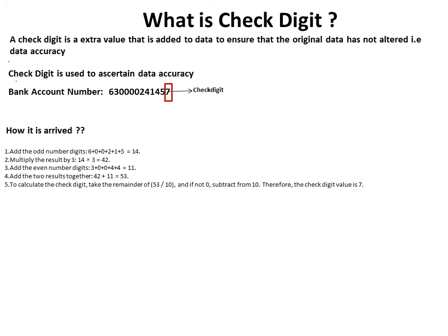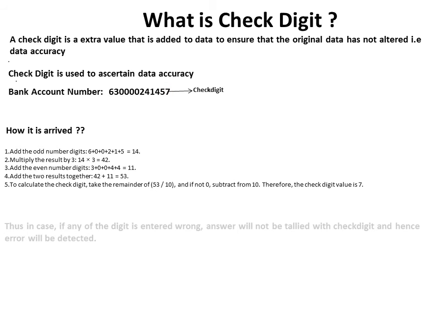First, we add all the odd-position digits, then we multiply the result by three. Again, the third step is to add the even-position digits, followed by a fourth and fifth step. If you apply these five steps, the answer will be seven. So if any of the digits between positions one to eleven are changed, the answer will not be seven. Thus, if any digit is entered wrong, the answer will not match the check digit and the error will be detected.